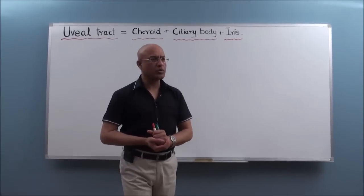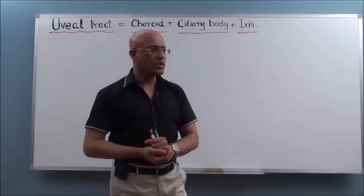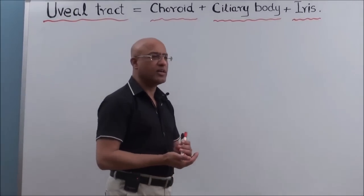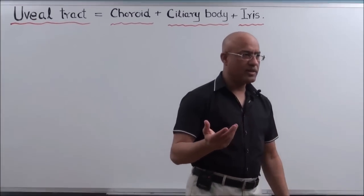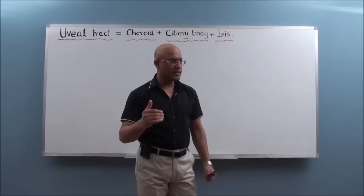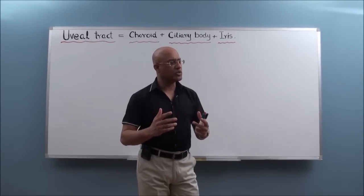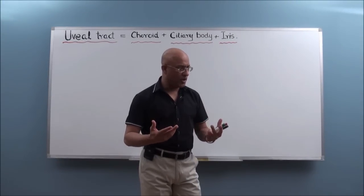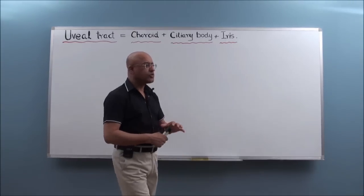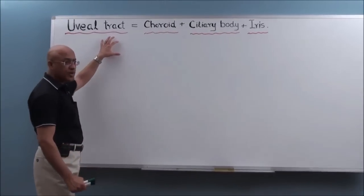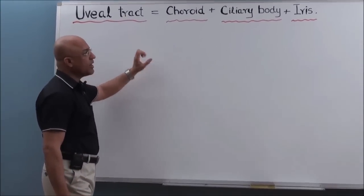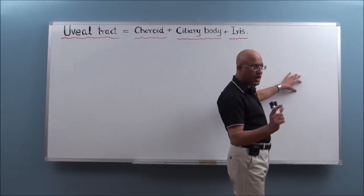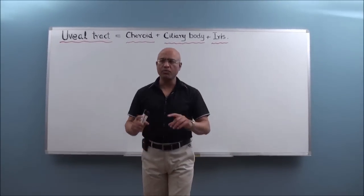Today we are going to continue the lectures on the structure of the eyeball. We have already discussed the cornea and sclera, and we have also discussed the arterial supply to the eyeball. Today we will specifically talk about the uveal tract. Let me very briefly review the basic structure of the eyeball and then we will go into detail of the uveal tract.